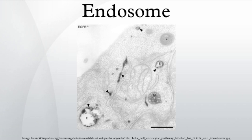Molecules are also transported to endosomes from the trans-Golgi network and either continue to lysosomes or recycle back to the Golgi. Furthermore, molecules can be directed into vesicles that bud from the perimeter membrane into the endosome lumen. Therefore, endosomes represent a major sorting compartment of the endomembrane system in cells.